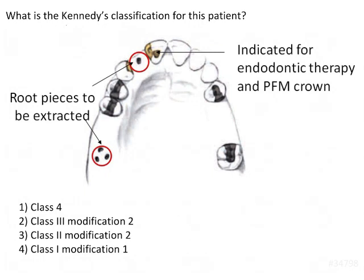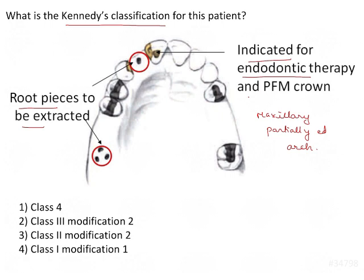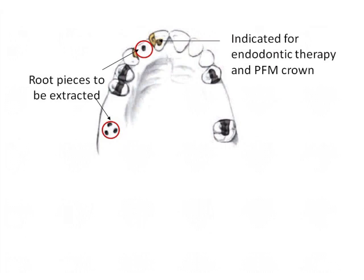What is the Kennedy's classification for this patient? We have a maxillary edentulous arch and we have to determine the Kennedy's classification. We have root pieces to be extracted, a tooth indicated for endodontic therapy, and a PFM crown.